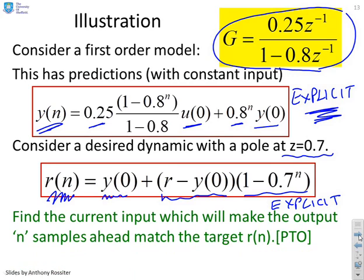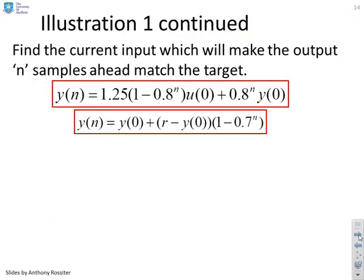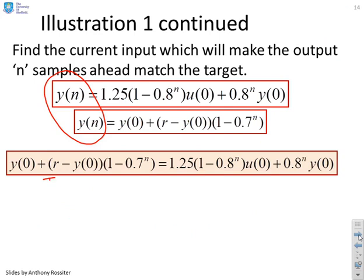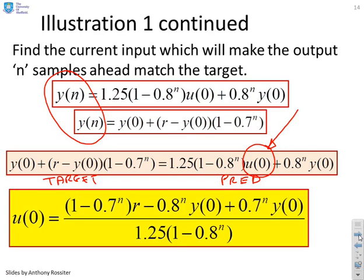So what we want to do now is find the current input which will make the output n samples ahead match the target. In other words, we want to make these two values the same. We're going to force coincidence of our prediction with our target. So I've written those two equations down again. The only difference here is I've written them both as yn. We want to make both of those equal. So you can see here we've got our target and over here we've got our prediction. And all we're doing is making those the same. And clearly there is only one unknown. Here it is, u of 0. Everything else in this equation is known. So I can solve for u of 0 explicitly and just write the answer down by inspection.